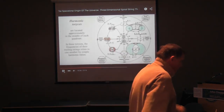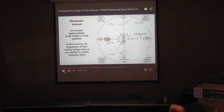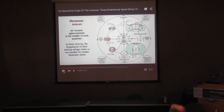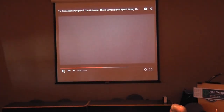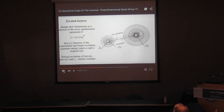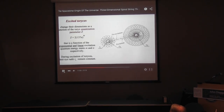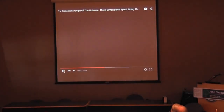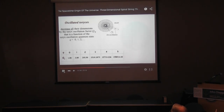Harmonic Tauruses are located approximately in the middle of each quadrant. In these Tauruses, the frequencies of their trailing strings relate to one another by simple harmonic ratios. Excited Tauruses change their dimensions as a function of the Tauruses quantization parameter z — a function of the exponential and linear excitation quantum energy states m and n respectively. Oscillated Tauruses decrease all their dimensions by the Tauruses oscillation factor pi-sub-pi.